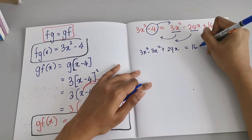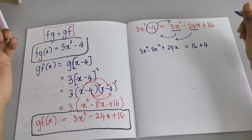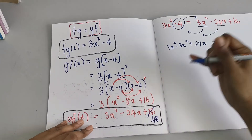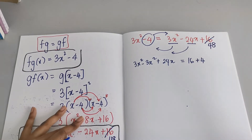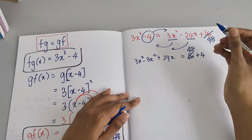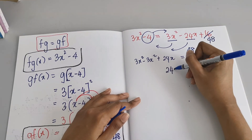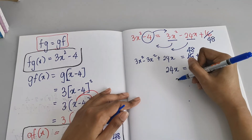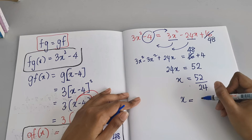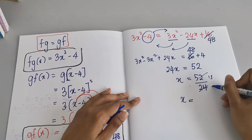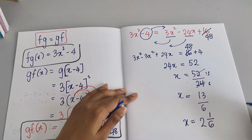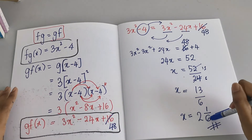Hold on — there's a correction: 3 × 16 = 48, not 60, so gf(x) = 3x² − 24x + 48. Continuing: 24x = 48 + 4 = 52, so x = 52/24 = 13/6, which as a mixed number is 2 and 1/6. We have obtained the value of x.